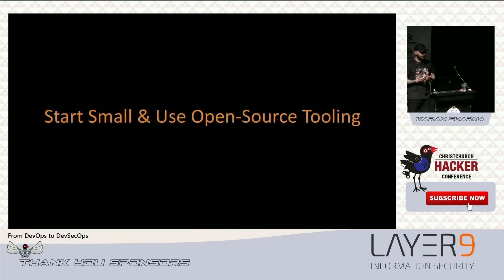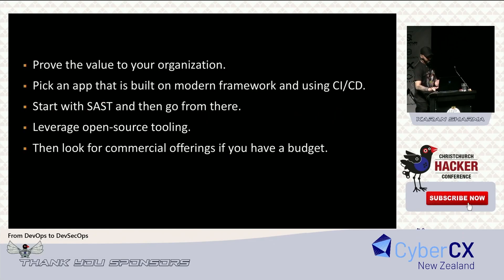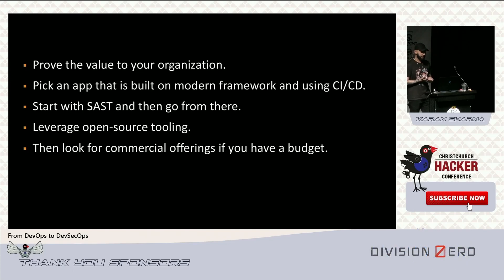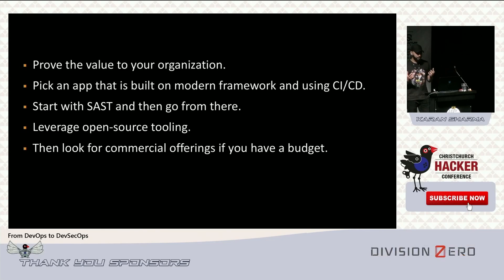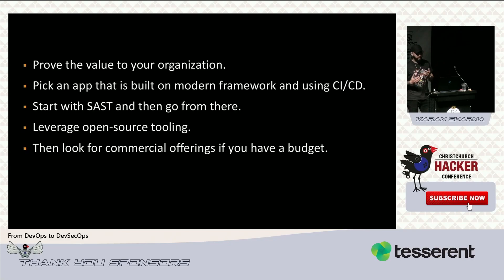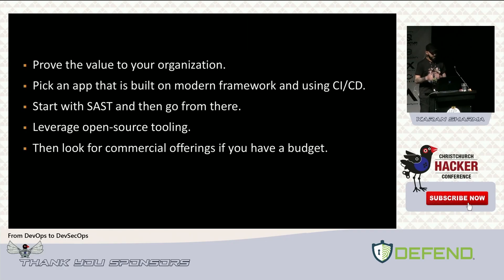To overcome these challenges, start small and leverage open source tooling. If you're early in your DevSecOps journey and trying to prove value to get funding, pick an application built on a modern framework that isn't super critical. Try one thing — threat modeling or integrating a SAST tool — and find vulnerabilities. Even picking up 10 or 20% of vulnerabilities is better than nothing. Show why automated security controls in your CI/CD matter, then pursue commercial tools once you have budget.